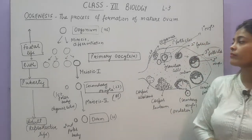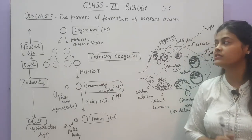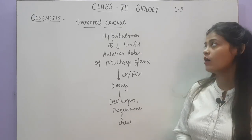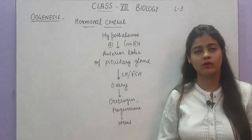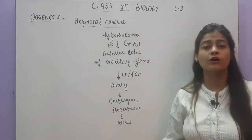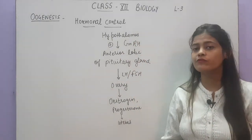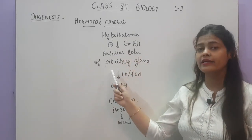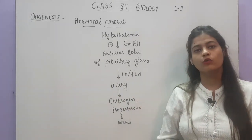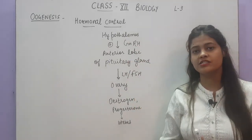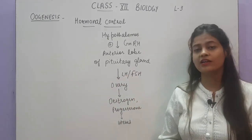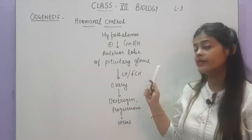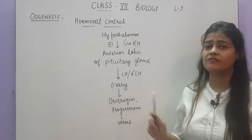Now let's see the hormonal control — how hormones affect oogenesis. The hypothalamus, a part of the brain, stimulates the secretion of GnRH (gonadotropin releasing hormone), which we have already discussed in spermatogenesis. GnRH causes a positive feedback on the anterior lobe of the pituitary gland, stimulating it. On the onset of puberty, GnRH secretion increases, causing increased stimulation of the anterior pituitary. The pituitary gland then releases two hormones: LH (luteinizing hormone) and FSH (follicle stimulating hormone) — the same hormones as in spermatogenesis.